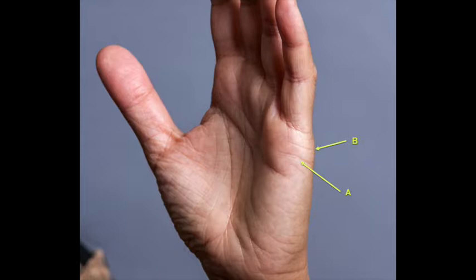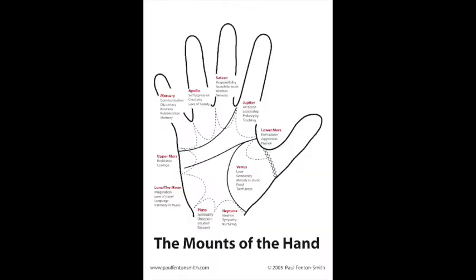If the line springs from the original relationship line it can indicate the two relationships occur at the same time. There is one more important point to be aware of to improve accuracy when reading relationship lines and this is the significance of the mounts of the hand.